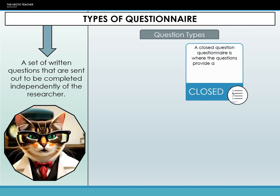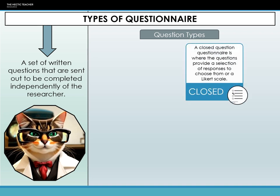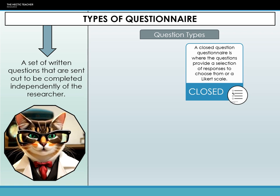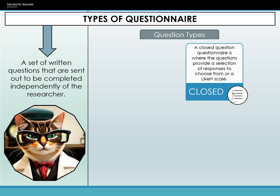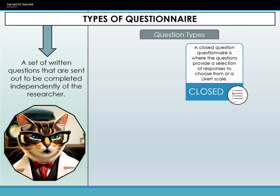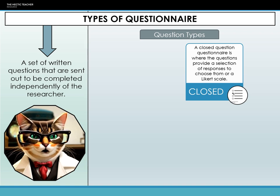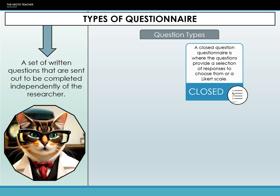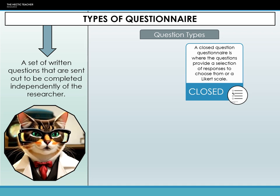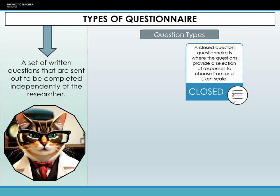First, we have closed questions, which provide respondents with a set of predefined answers — think about those multiple-choice questions you encounter in quizzes. Another popular type of closed question is the Likert scale, where participants indicate their level of agreement with a statement, such as 'I enjoy studying history,' responding on a scale from strongly disagree to strongly agree. The strengths here are that closed questions are straightforward to analyze and offer clear, structured data. However, they don't allow for in-depth or varied responses, which can limit the richness of the data.